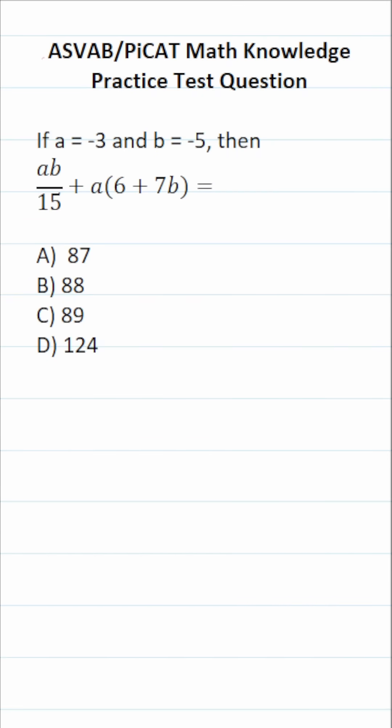This math knowledge practice test question for the ASVAB and PiCAT says if A equals negative 3 and B equals negative 5, then A times B over 15 plus A times 6 plus 7B in parentheses equals.